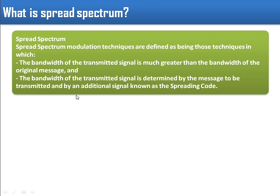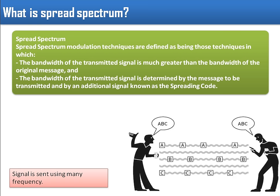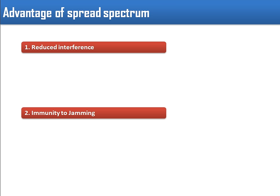So why is it called spread spectrum? The signal is spread over the channel bandwidth. The bandwidth of the transmitted signal is determined by the message to be transmitted and by an additional signal known as a spreading code. In spread spectrum, the sender uses multiple frequencies for sending data. When multiple frequencies are in use, some part of the communication is sent over one frequency and some part over another, making it very hard to intercept the complete communication.